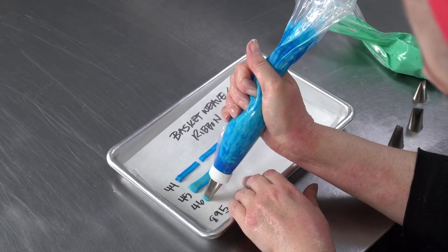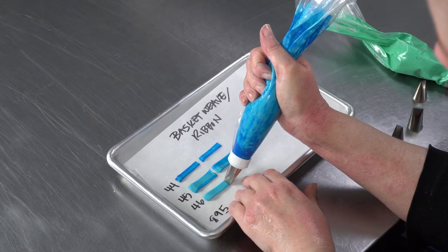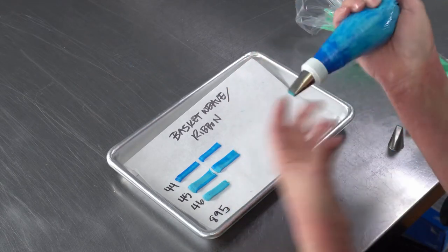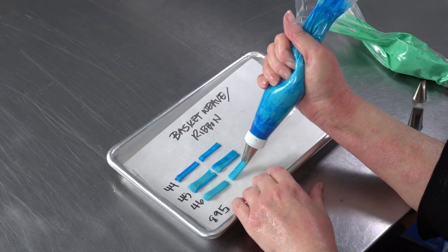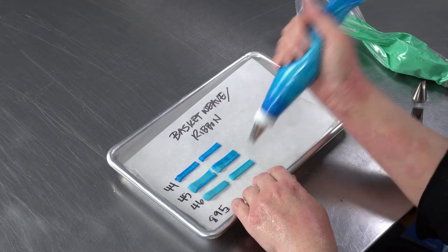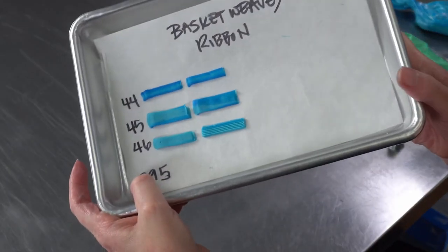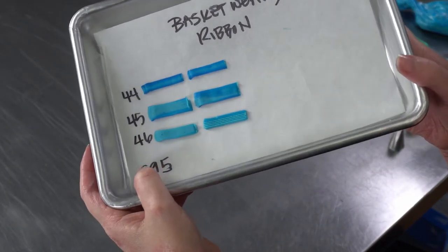One side is flat, like the other tips we've been using, and the other side is ridged, which gives it a little textured effect.